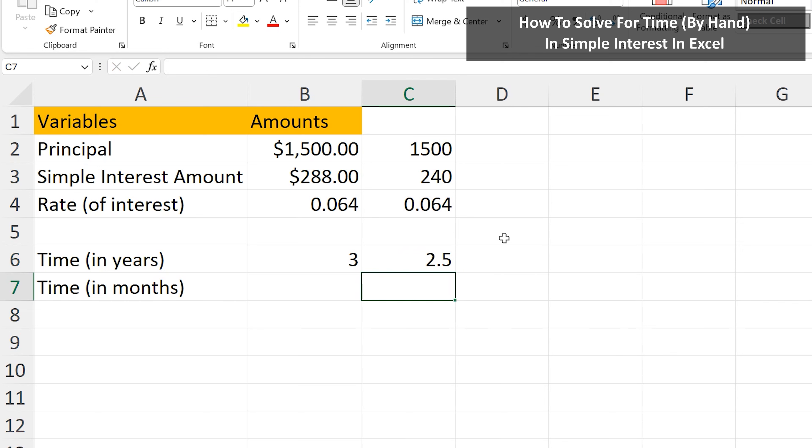To convert this to months, we take our answer of 2.5, cell C6, and multiply it by 12 months. As you see, I have set up in cell C7. I'll hit the enter key, and we get 30 months as our answer.